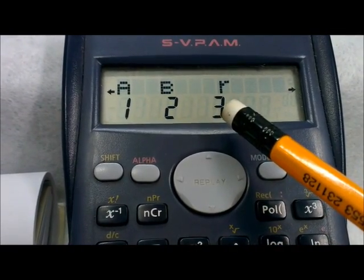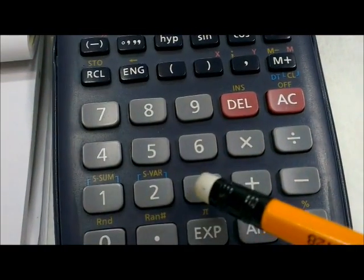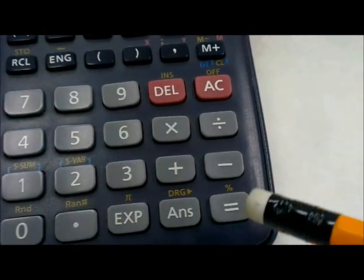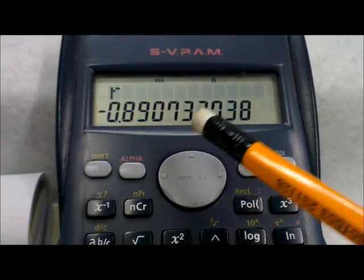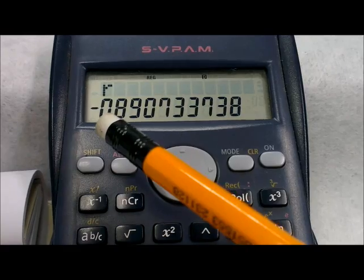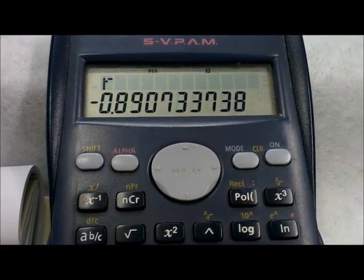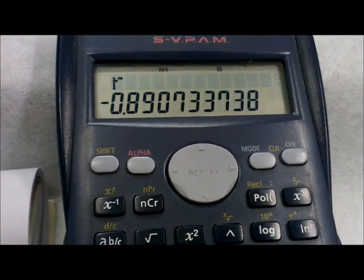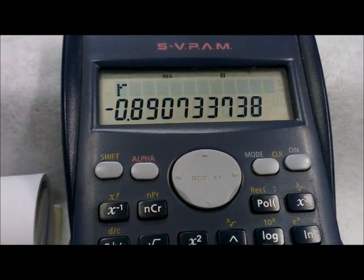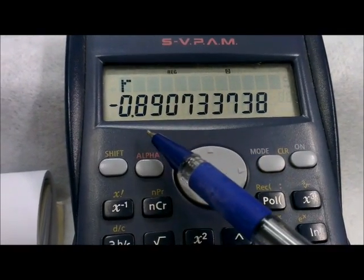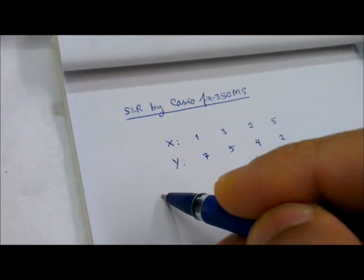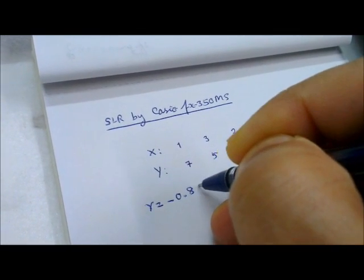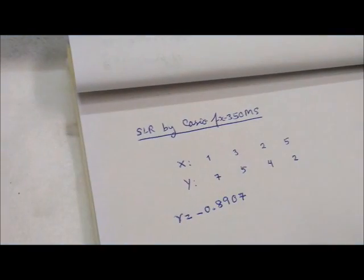If you want r — the Pearson correlation coefficient — press 3, but not yet; you have to press equal. Press equal and the entire r value is negative 0.8907. Usually you round off to the fourth decimal place, so r is minus 0.8907.